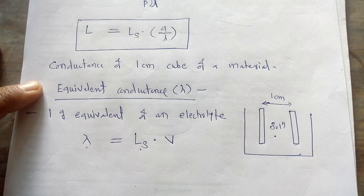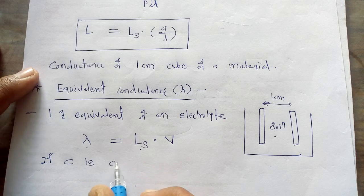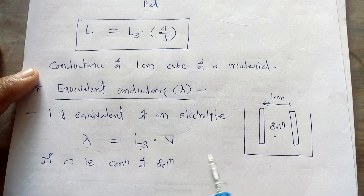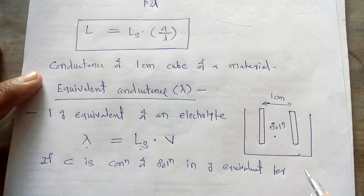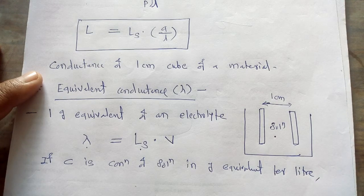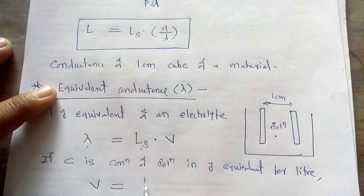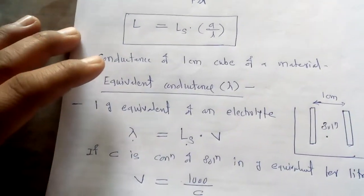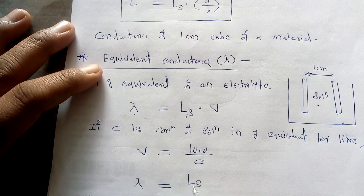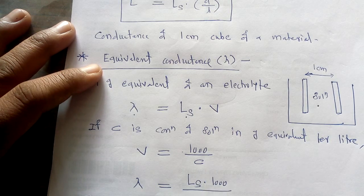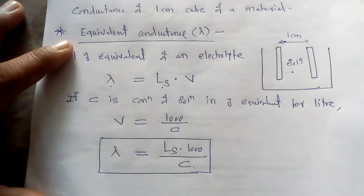Now if C is the concentration of the solution in gram equivalents per liter, then the volume V = 1000 / C. Substituting this value into the equation, we get λ = Ls × 1000 / C, where Ls is the specific conductance and C is the concentration of the solution. This is the final equation for calculation of equivalent conductance of an electrolytic solution.